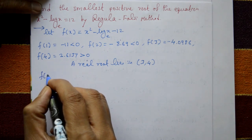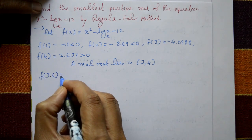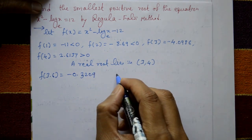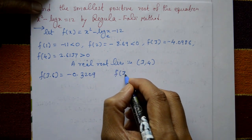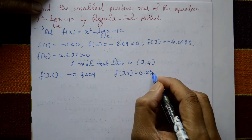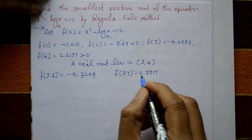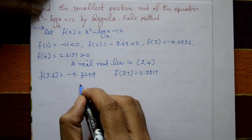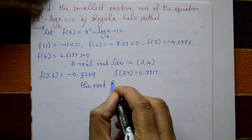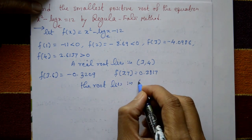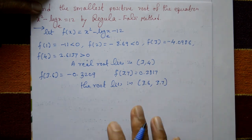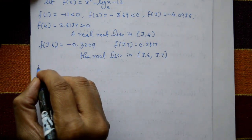f(3.6) = minus 0.3209 and f(3.7) = positive 0.3817. So the root lies in the interval 3.6 and 3.7.